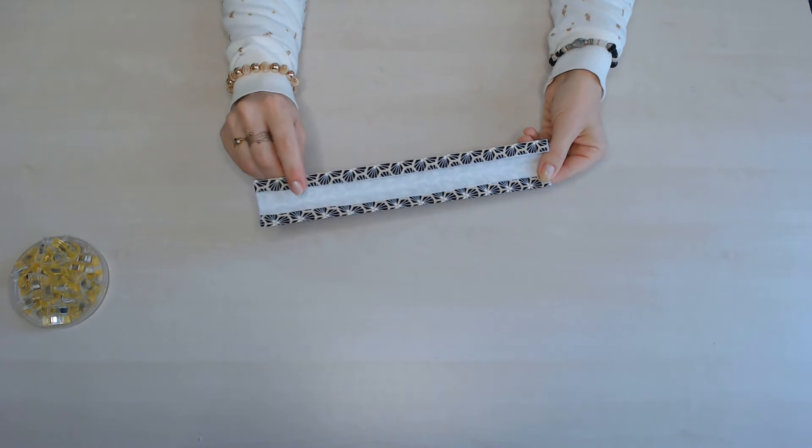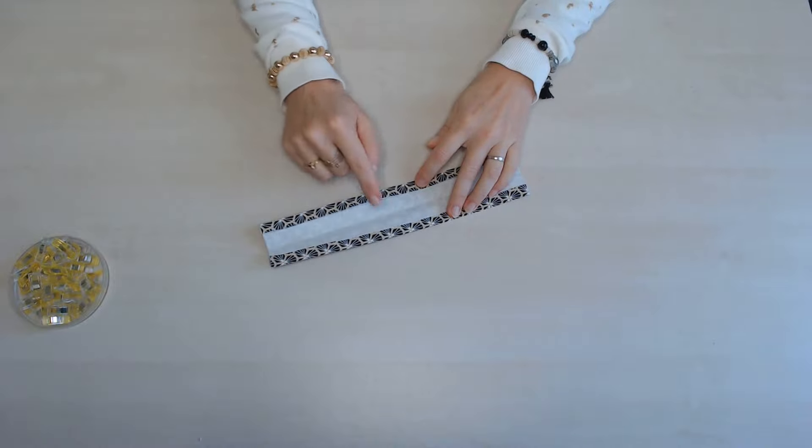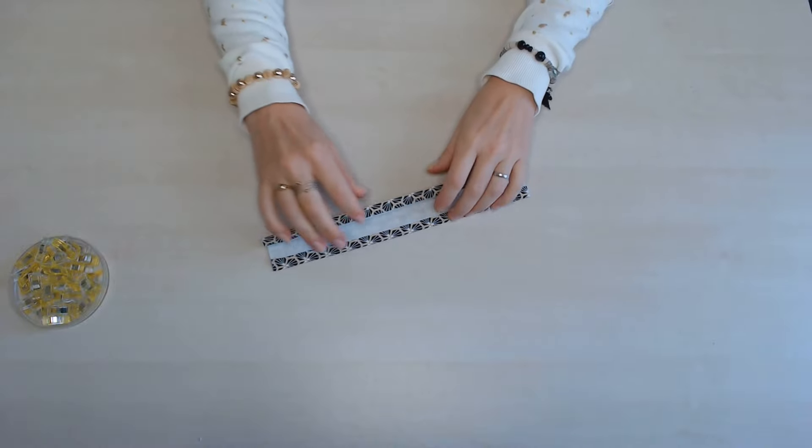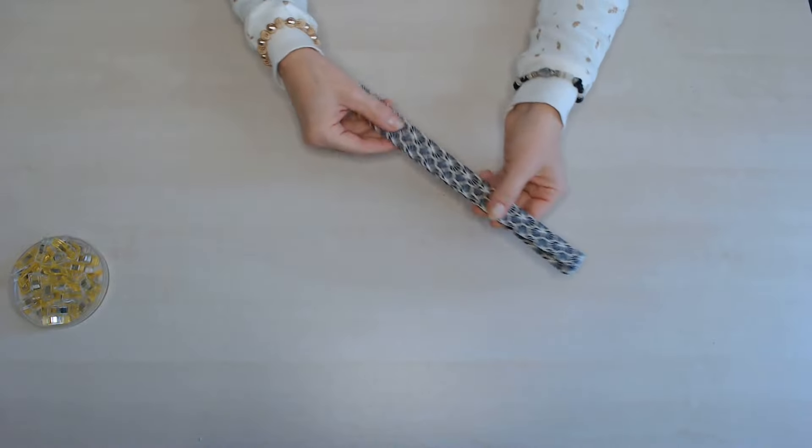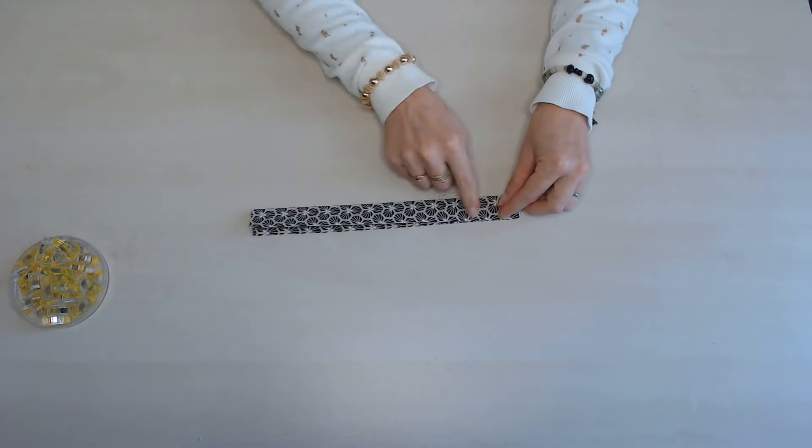Je commence par préparer ma poignée en repliant un centimètre de chaque côté et je replie en deux et je vais piquer à 1 mm de chaque côté.